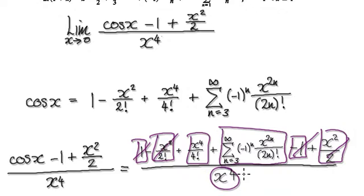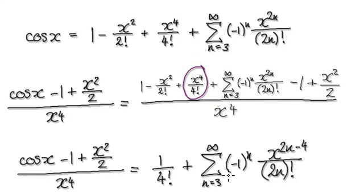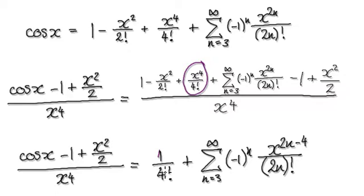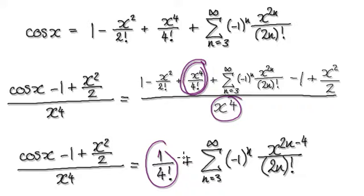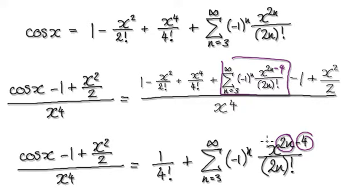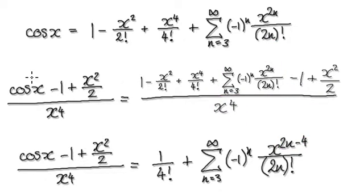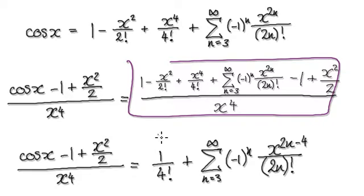Divide all the terms in the summation by x to the power of 4. Dividing this term by x to the power of 4 leaves 1 over 4 factorial. For every single term inside the summation divided by x to the power of 4, the exponent simply becomes 2n minus 4. So from here, that takes us to this expression.